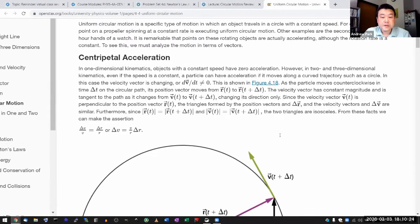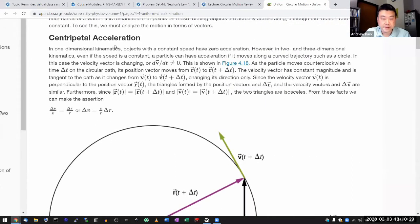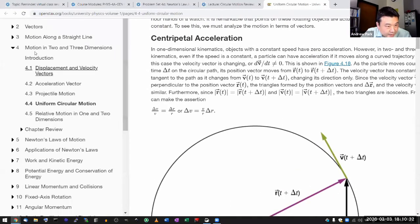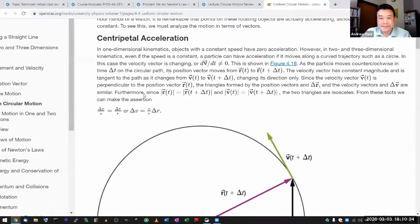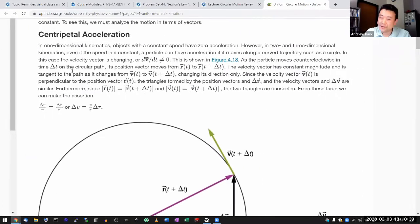So this is kind of a reminder in one-dimensional kinematics. It's chapter four, so it's something you hopefully will remember reading when we were doing chapter four. In two and three dimensional kinematics, even if the speed is constant, the particle can have acceleration if it moves along a curved trajectory such as a circle. So the acceleration is happening through change of the direction.